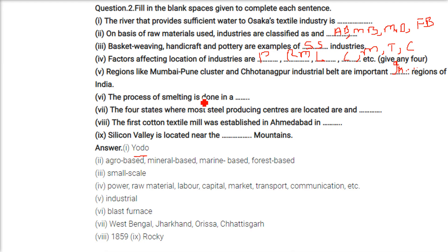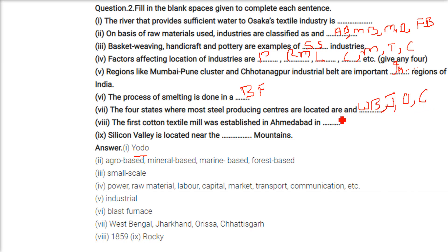The process of smelting is done in a blast furnace. The four states where most steel producing centers are located are West Bengal, Jharkhand, Odisha, and Chhattisgarh. The first cotton textile mill was established in Ahmedabad in 1859.